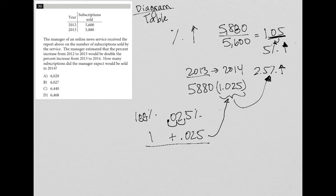And what I get there is 6,027. Therefore, the correct answer here is choice B, 6,027.